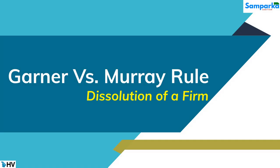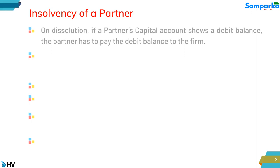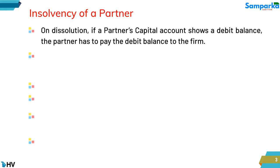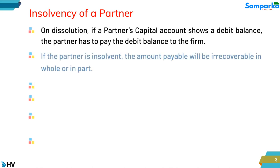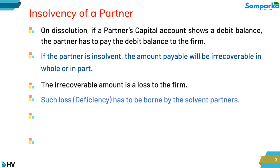Let's discuss the topic on Garner vs. Murray Rule — Insolvency of a Partner. On dissolution, if a partner's capital account shows a debit balance, the partner has to pay the debit balance to the firm. If the partner is insolvent, the amount payable will be irrecoverable in whole or in part. The irrecoverable amount is a loss to the firm. Such loss — deficiency — has to be borne by the solvent partners.